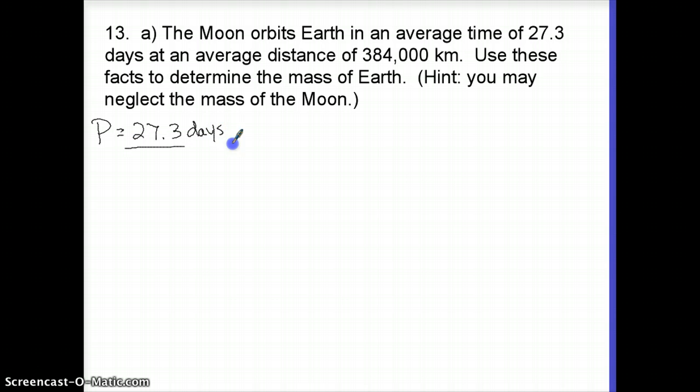So I've got the period of 27.3 days. I need that in seconds. So let's do some conversions. There's 24 hours in a day, 60 minutes in an hour, and 60 seconds in a minute. So the orbital period of the moon is about 236,000 seconds. I am doing significant figures by the way. I'm sorry, I got that wrong.